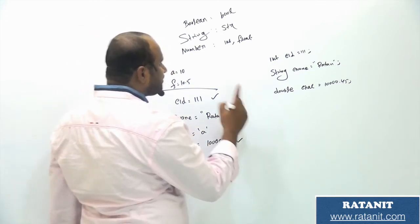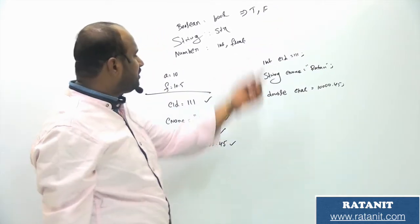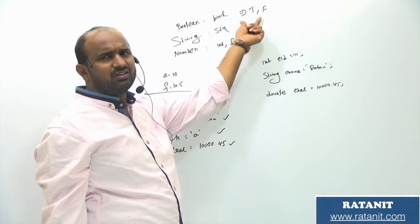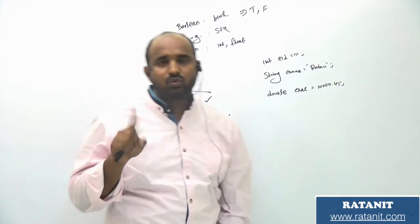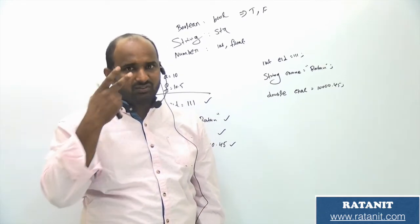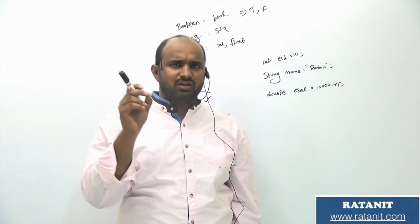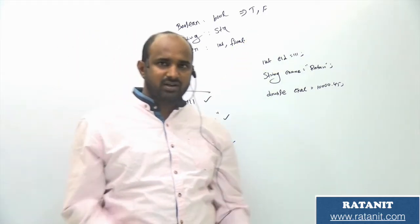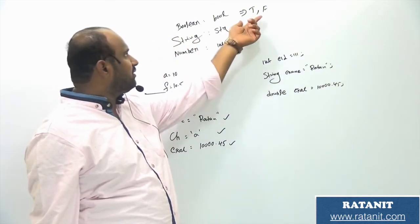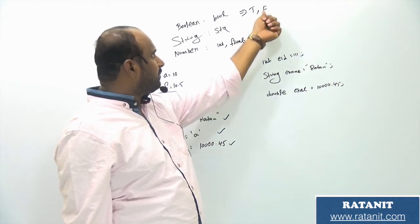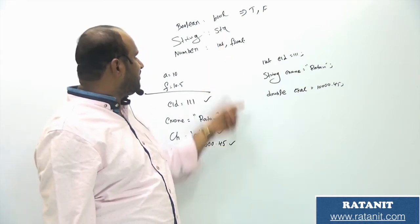Boolean contains just two values: True and False. True represents 1 and False represents 0. When writing boolean values in Python, T in True must be capital and F in False must be capital. Basically to represent data we have three data types: number, string, and boolean.